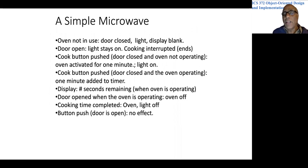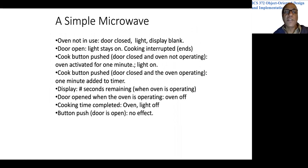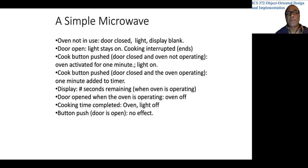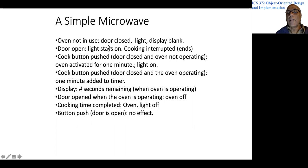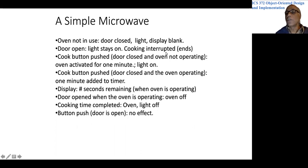To see why we need such an approach, let's consider a simple microwave. This is not as sophisticated as the microwave you might have at home, but it will do the job for our purpose of learning the finite state machine approach. This simple microwave works like most microwaves in the sense that when the oven is not in use and the door is closed, the light is off, and when you open the door, the light stays on.